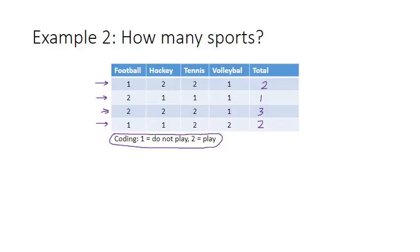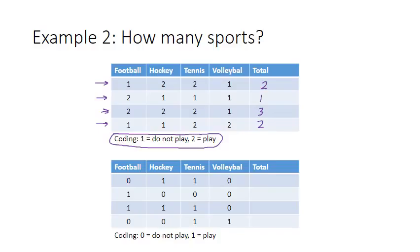Again, I have to evaluate every time each separate case for each separate variable. If I would have coded this as a zero and one, then all I need to do is actually add these up. One plus one, so actually zero, plus one, plus one, plus zero, nicely gives me immediately the result of two. And here it's a one, here it becomes three, and here it becomes a two.